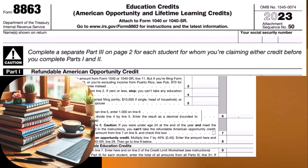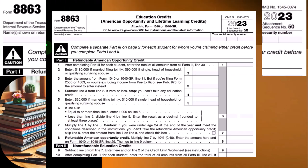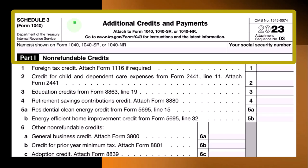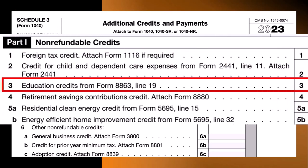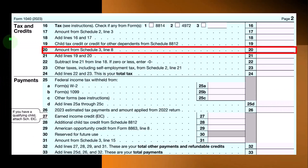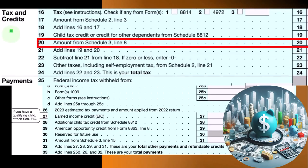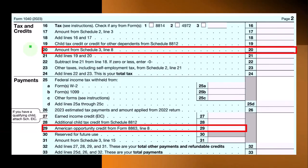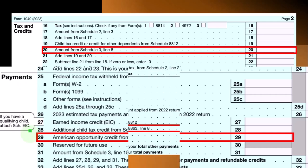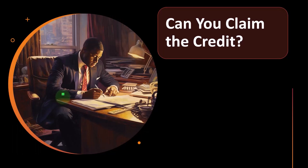Form 8863 Education Credits covers both the American Opportunity Credit and the Lifetime Learning Credit. This flows into Schedule 3, Additional Credits and Payments, Part 1 Non-Refundable Credits, Line 3. That then flows into Line 20 on page 2 of the Form 1040. For the American Opportunity Credit, there's both a non-refundable and a refundable component, with Line 29 going directly from Form 8863.